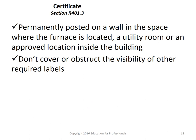A key item is the permanent certificate, which must be posted on a wall in the space where the furnace is located, a utility room, or another approved location inside the building — traditionally at the electrical panel. This certificate shall be completed by the builder or registered design professional and should list R-values and insulation for the building envelope, U-factors, SHGC and fenestration, surface water heating equipment, and building envelope air leakage testing results. You can reference section R401.3 for the full list.